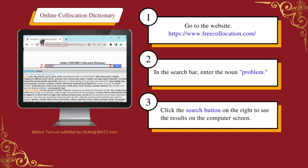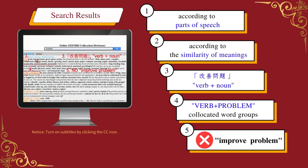To determine if this is a correct English word collocation, we can use this online collocation dictionary. The process is as follows: one, go to the website; two, in the search bar enter the noun 'problem'; three, click the search button on the right to see the results on the computer screen.